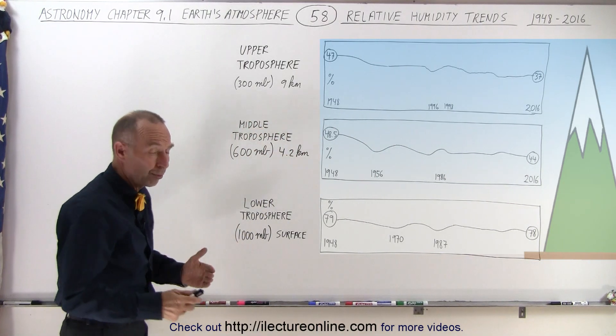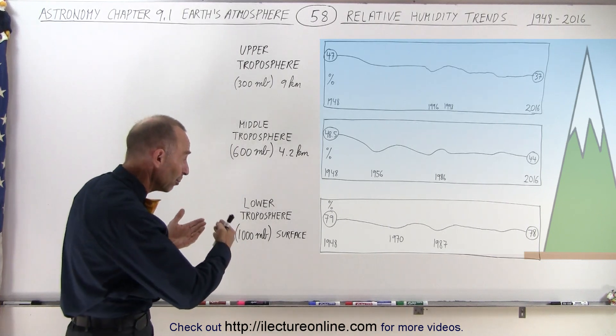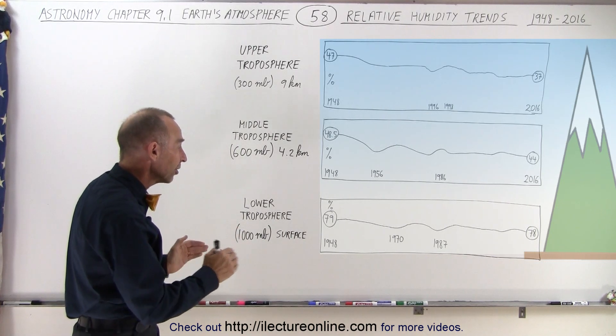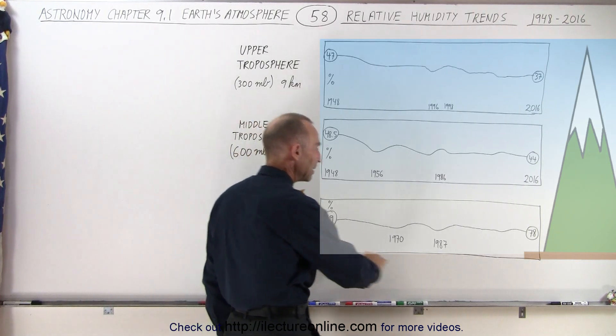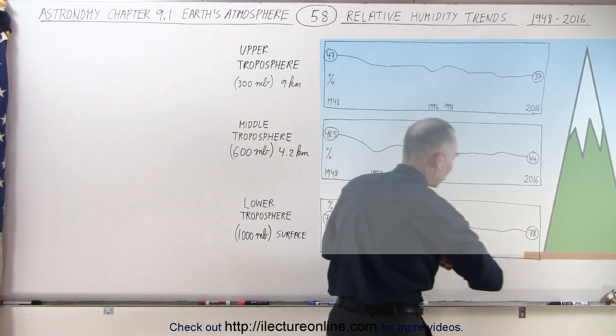And in the lower troposphere, which is the most important layer of the troposphere, where most of the water vapor is found, you can see that there's been a very small amount of difference between 1948 and the more recent years in 2016.